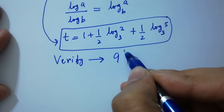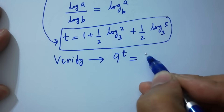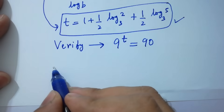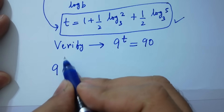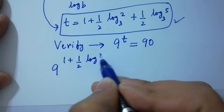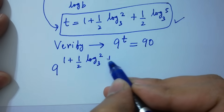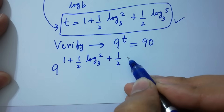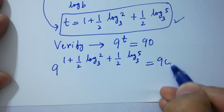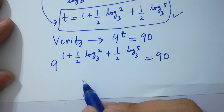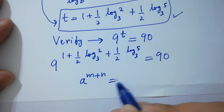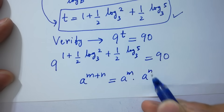Verify: 9 to the power t equals 90. Put the value of t: 9 to the power 1 plus half log 2 to the base 3 plus half log 5 to the base 3 equals 90. Using a to the power m plus n equals a to the power m times a to the power n.